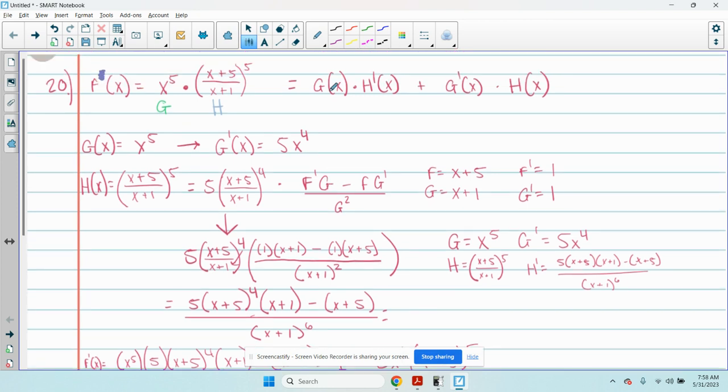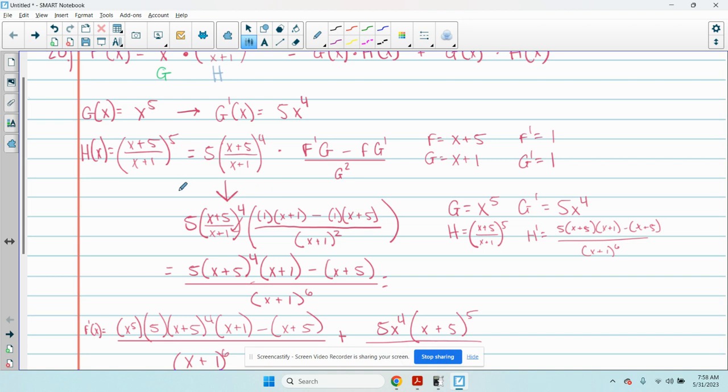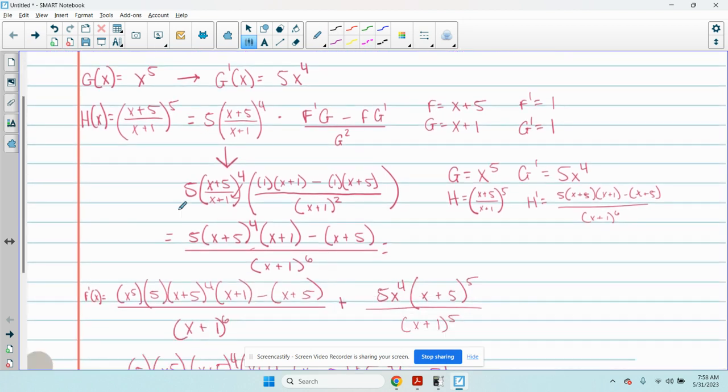So it's going to have to be the first times the derivative of the second. So we have to find the derivative of h prime, which is what you started doing here. I think there was a mistake made in this step.